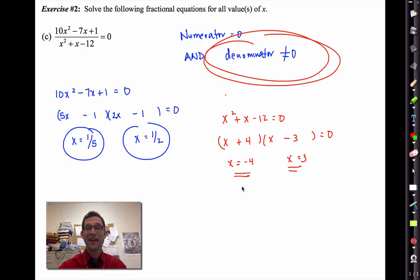In this case, 1 fifth and 1 half are valid because the only things that make the denominator equal to 0 are negative 4 and positive 3. I don't want to claim that those are answers. They are not solutions. But we needed to check to make sure that the solutions we did get didn't make that denominator equal to 0. Pause the video again if you need to, and then we're going to clear out the text.